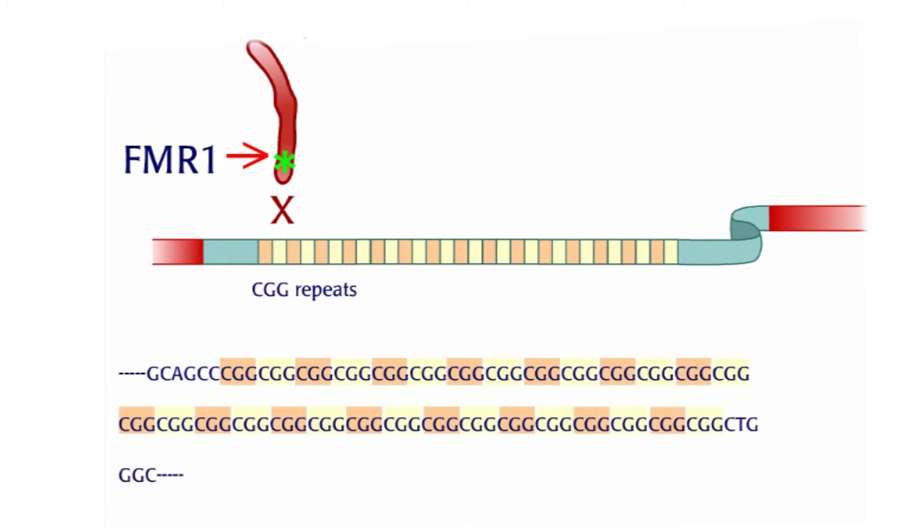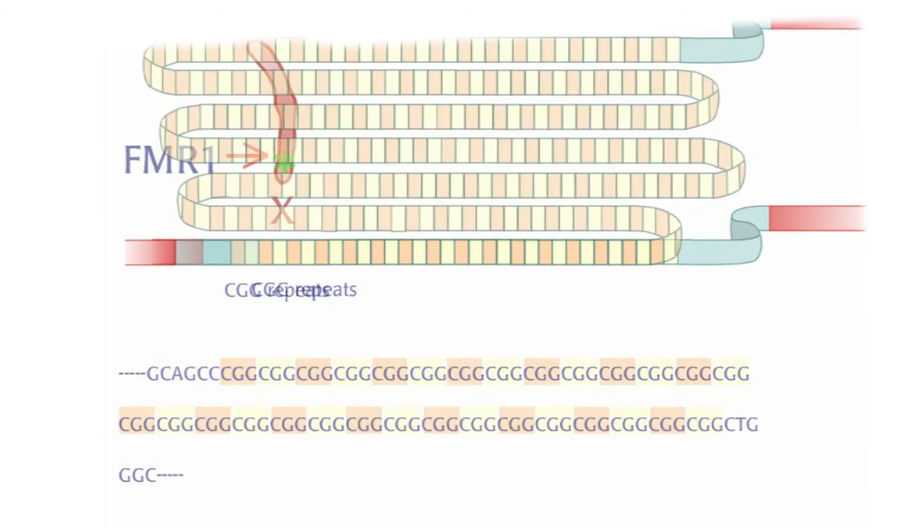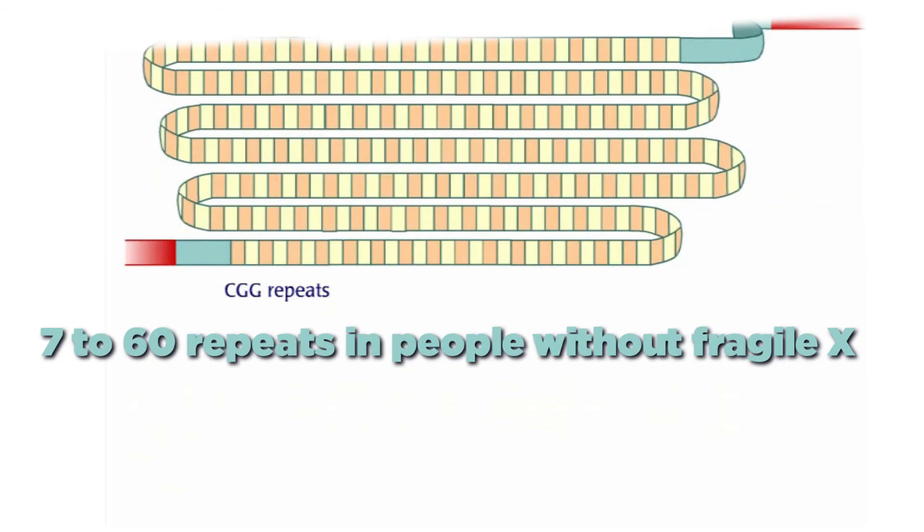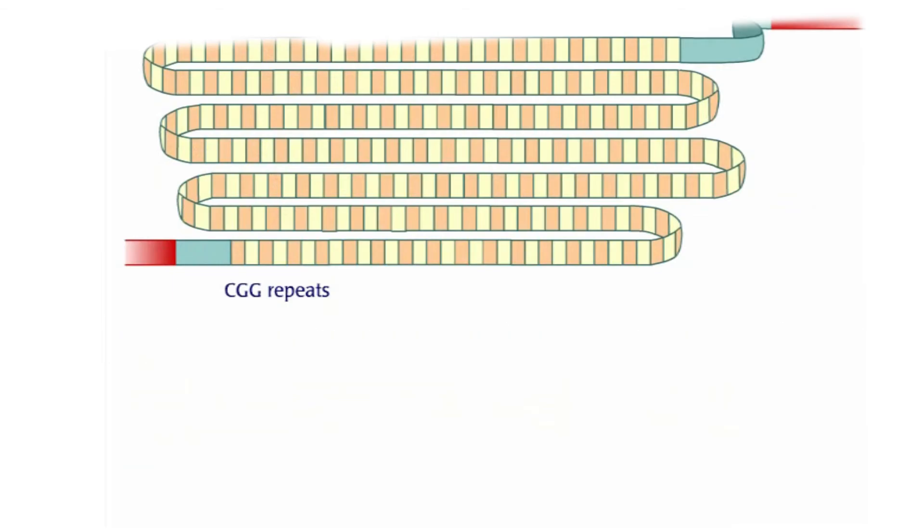The number of repeats varies from person to person, usually ranging from 7 to 60 repeats in people without Fragile X. The most common version of the gene has 30 repeats.